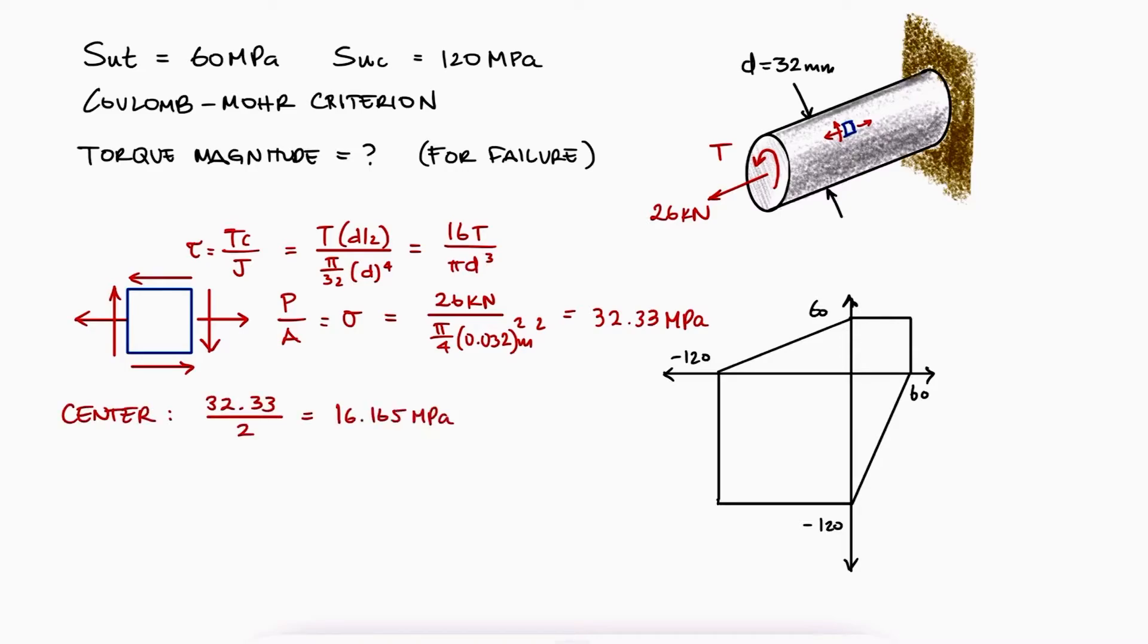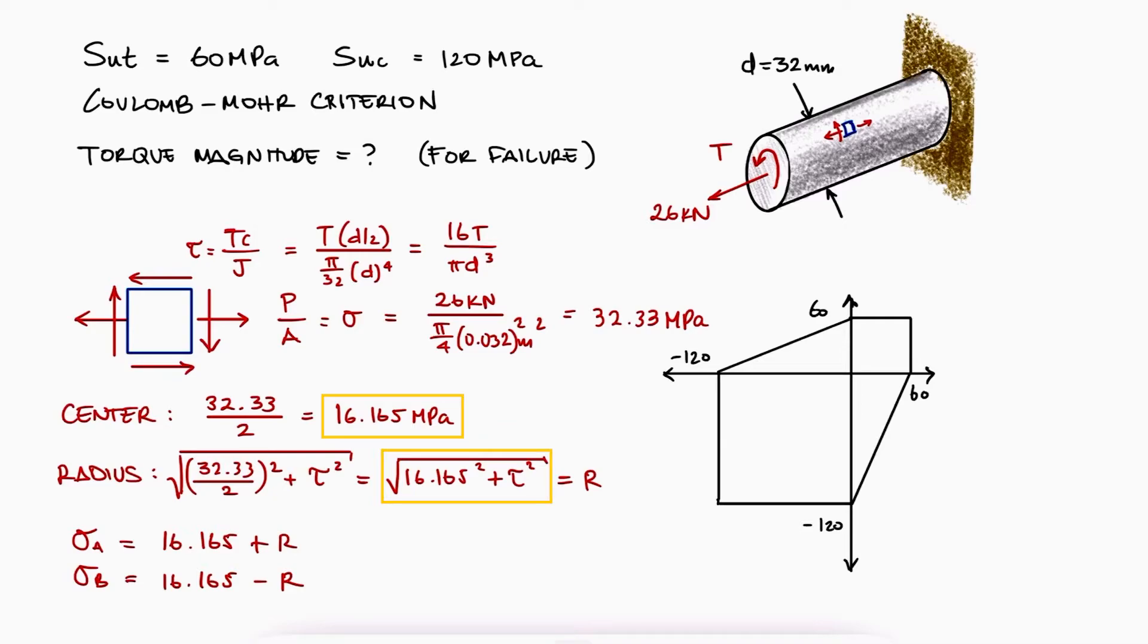The radius of the circle will be dependent on tau and so would the in-plane principal stresses. Since the center of the circle is lower than the radius of the circle for any non-zero value of tau, we know that one of the principal stresses will be positive and the other one will be negative, which means that on the stress envelope, our in-plane stress state will be either on quadrant 2 or quadrant 4.